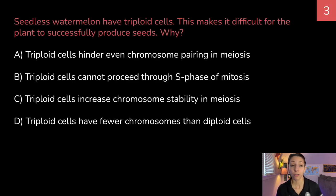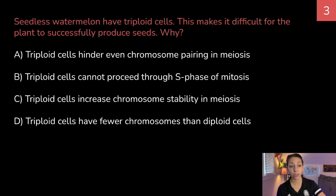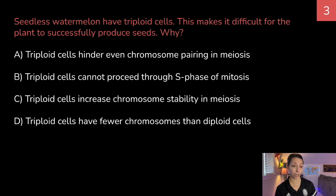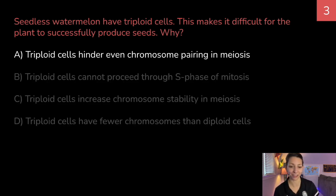Question 3: seedless watermelons have triploid cells, which makes it difficult for the plant to successfully produce seeds. Why? A: triploid cells hinder even chromosome pairing in meiosis; B: triploid cells cannot proceed through the S phase of mitosis; C: triploid cells increase chromosome stability in meiosis; or D: triploid cells have fewer chromosomes than diploid cells. The correct answer is A: triploid cells hinder even chromosome pairing in meiosis.